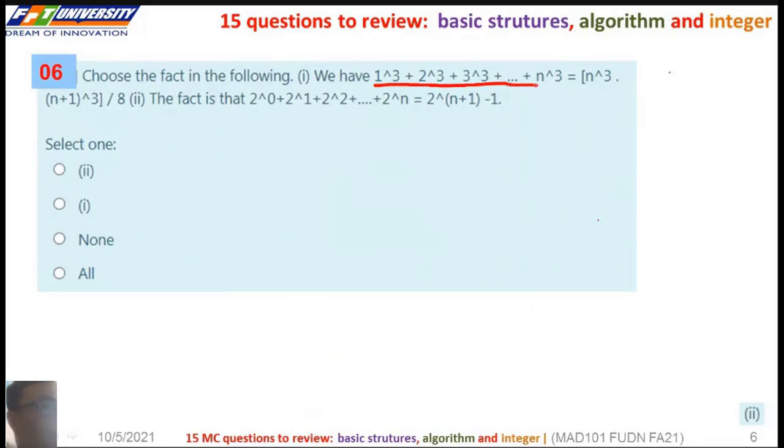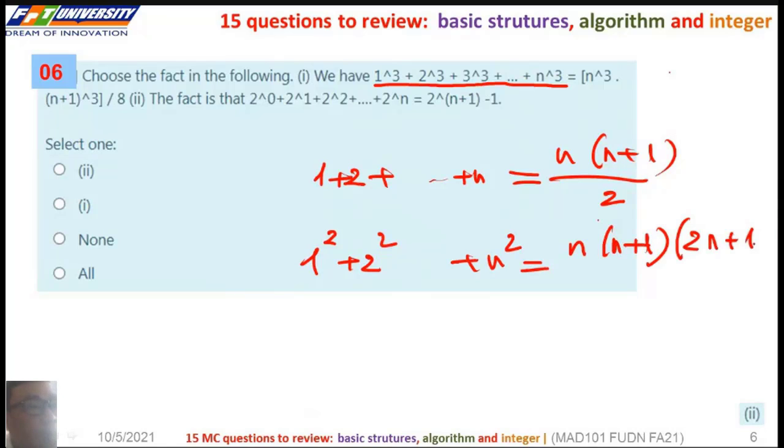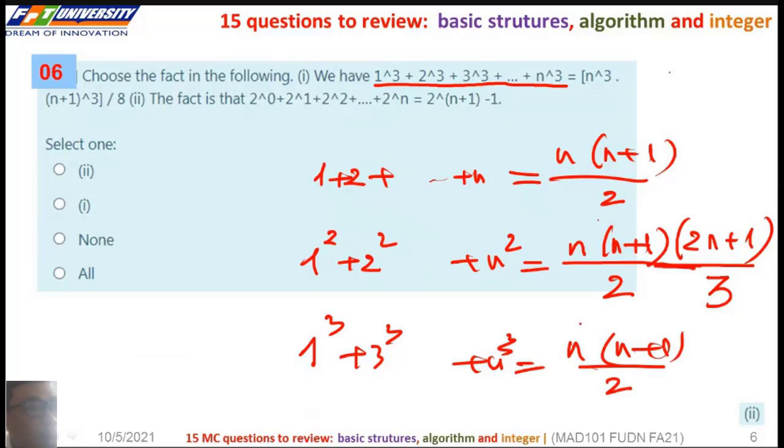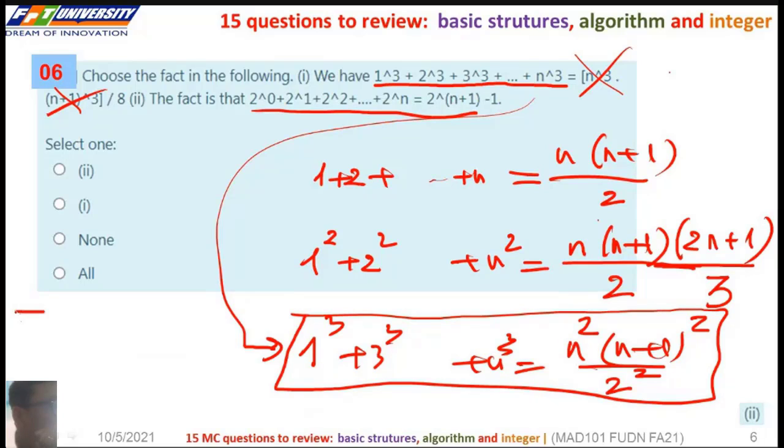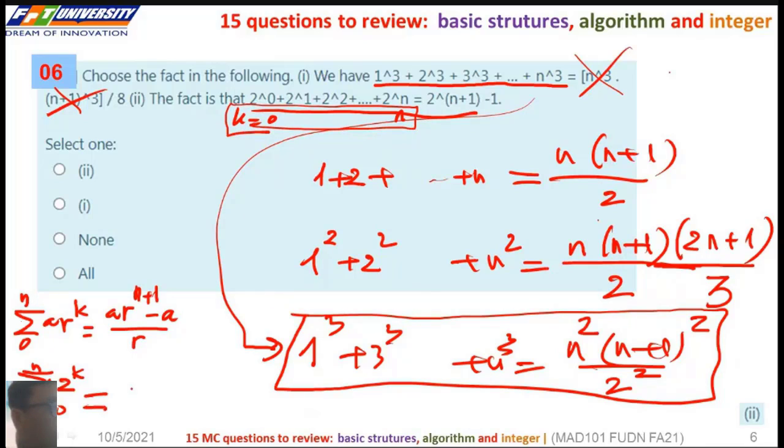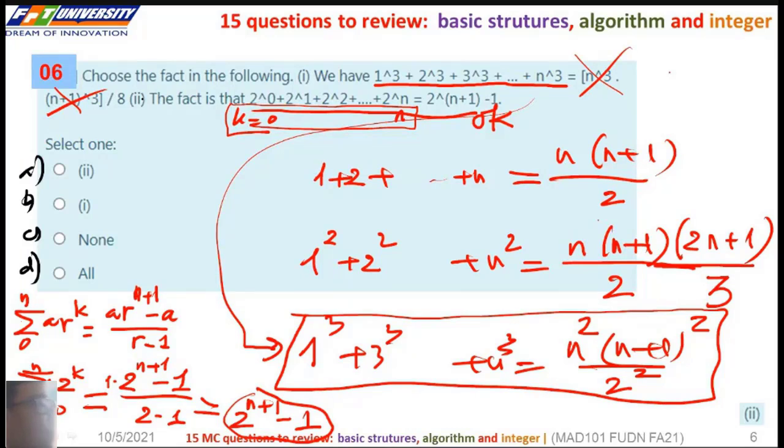So the next. If you remember this summation, we have 1 plus 2 to n is n(n+1)/2. And the sum of squares is n(n+1)(2n+1)/6. The sum of cubes is n^2(n+1)^2/4. So the summation here is 2^(n+1) - 1 for sum of powers of 2. And here we have 2^(n+1) - 1.